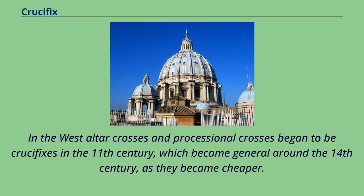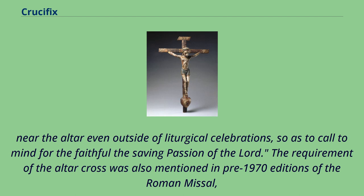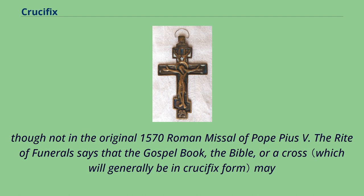In the West, altar crosses and processional crosses began to be crucifixes in the 11th century, which became general around the 14th century as they became cheaper. The Roman rite requires that either on the altar or near it there is to be a cross with the figure of Christ crucified upon it, a cross clearly visible to the assembled people. It is desirable that such a cross should remain near the altar even outside of liturgical celebrations, so as to call to mind for the faithful the saving passion of the Lord. The requirement of the altar cross was also mentioned in pre-1970 editions of the Roman Missal, though not in the original 1570 Roman Missal of Pope Pius V.